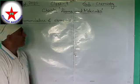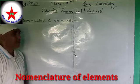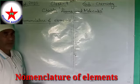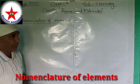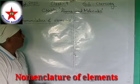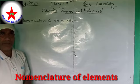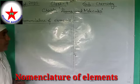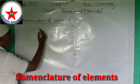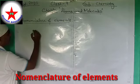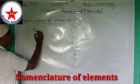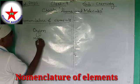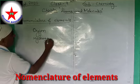In the previous class we came to know that atoms of the same type constitute a particular type of element, and molecules of the same type constitute the formation of a compound. Atoms have constituted elements such as oxygen, hydrogen, carbon, and so on.